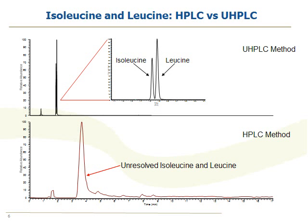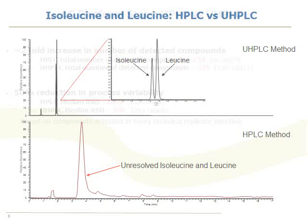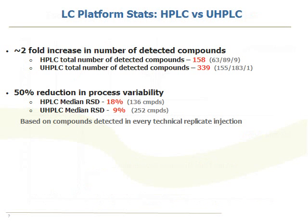The UHPLC method — you can see the peak down here, blown up — gives you complete baseline resolution of these two molecules. This is part of what's driving the improvement in number of detected compounds, but also the optimized injections helps out a great deal as well.